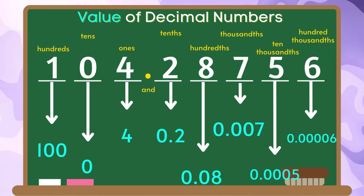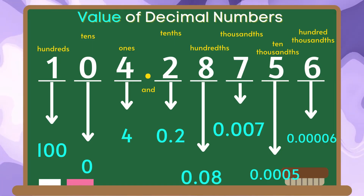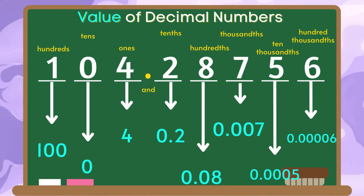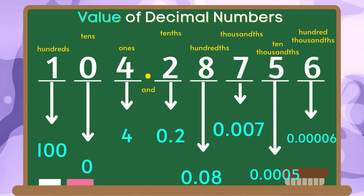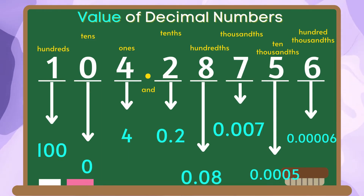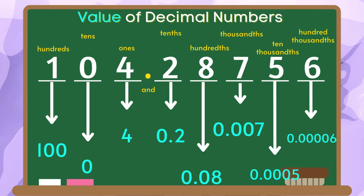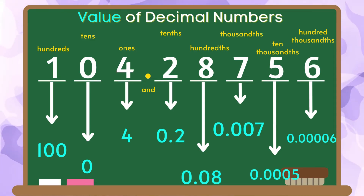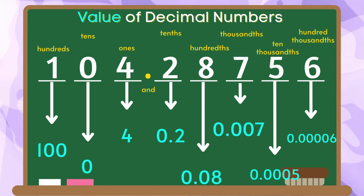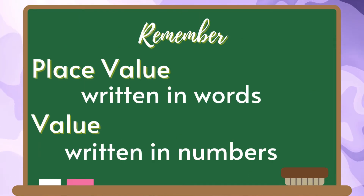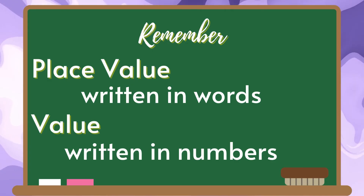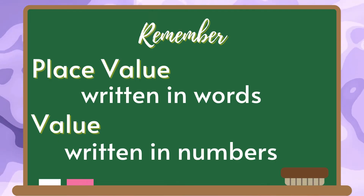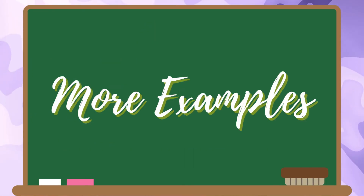Now, let's recap the value of the given decimal number. The value of one is one hundred. The value of zero is zero. The value of four is four. The value of two is two tenths. The value of eight is eight hundredths. The value of seven is seven thousandths. The value of five is five ten thousandths. And the value of six is six hundred thousandths. Remember that the place value is written in words while value is written in numbers.